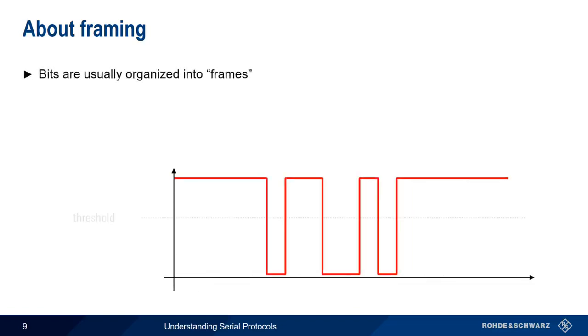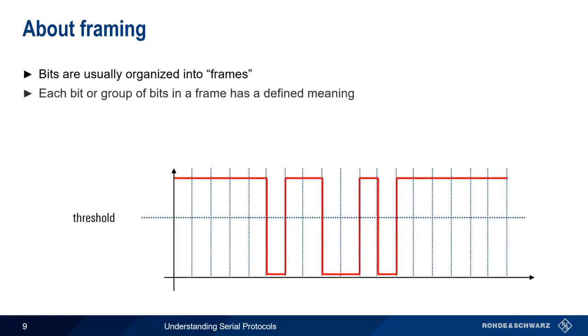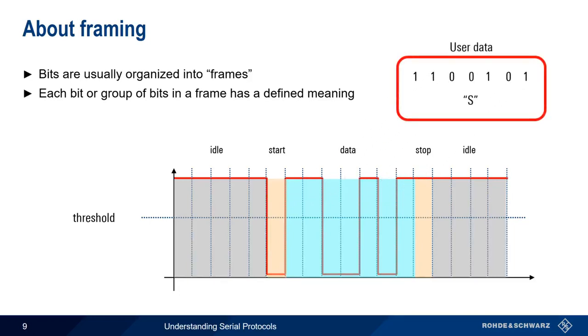Serial protocols typically order or organize bits into so-called frames. The individual bits or groups of bits in the frame have defined meanings, and some knowledge of the structure is needed to decode the frames correctly. For example, to decode the UART serial protocol, we need to know that the idle state of the line is a high voltage level, and that a transition from high to low is a start bit that indicates the start of our frame. We then need to know how many data bits to read, as well as the fact that there's a high voltage level stop bit that ends the frame, followed by a return to the idle state. By knowing the frame structure, we can extract the user data from the serial bitstream.